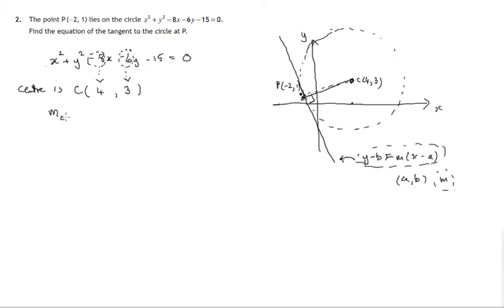So let's first work out the gradient of CP. That's the radius gradient. y difference over x difference. So the y difference, 3 minus 1. x difference, 4 minus negative 2. It's the difference of the two x coordinates. So that's 2 over 4 plus 2, 6. So that's 1 third.